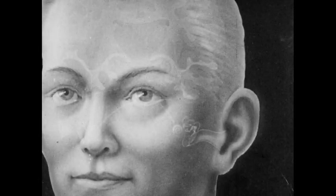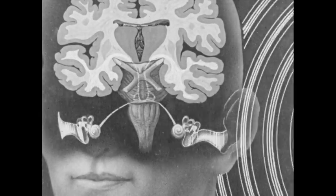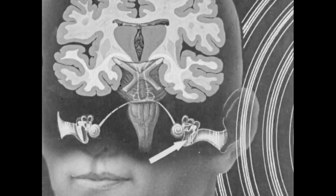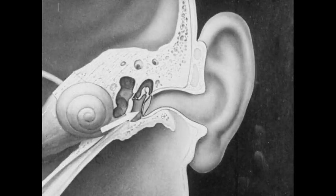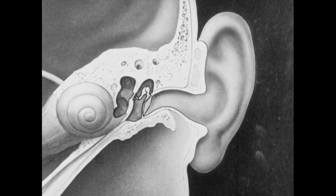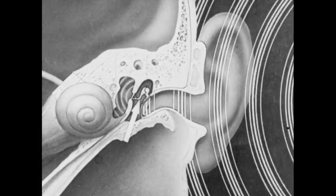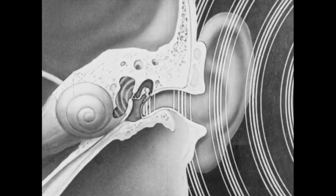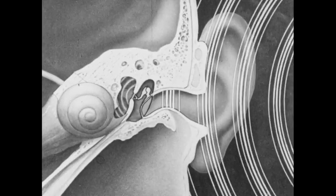They are first collected by the outer ear and directed by it to the eardrum. The eardrum, like any other diaphragm, is influenced by changes in pressure, such as those produced by longitudinal waves in air or other fluid media. Sound waves therefore result in vibrations of this eardrum.